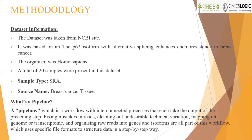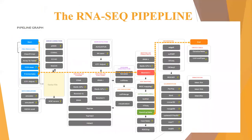Let's understand what a pipeline is. A pipeline is a workflow with interconnected processes where each step takes the output of the preceding step. This workflow includes fixing mistakes in reads, cleaning out undesirable technical variations, mapping the genome onto transcripts, and organizing raw reads into genes and isoforms, using specific file formats to structure data in a step-by-step way.